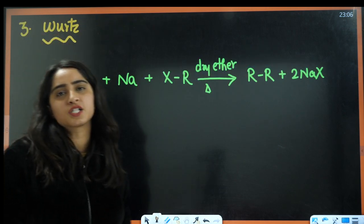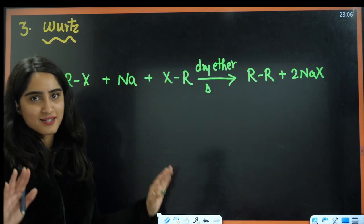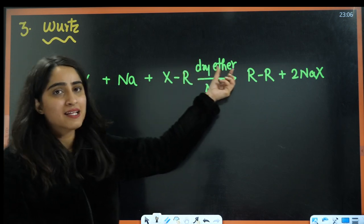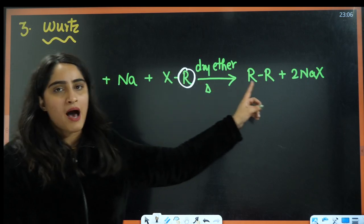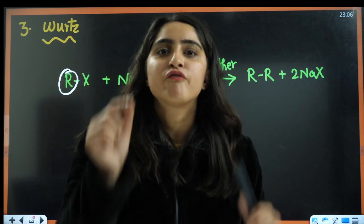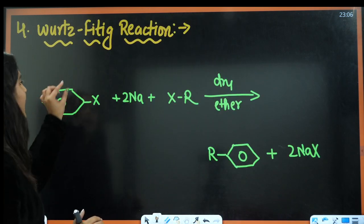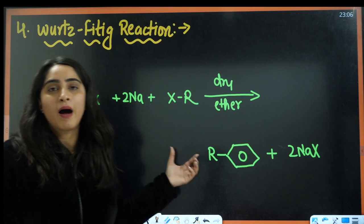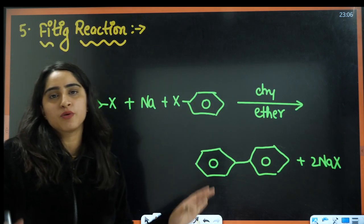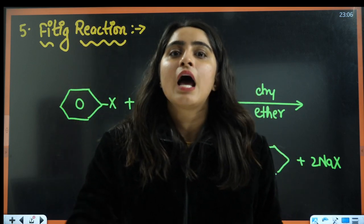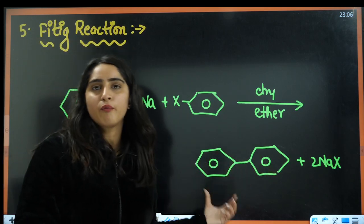Next is Wurtz reaction, Wurtz-Fittig reaction, and Fittig reaction — all are the same family. Sodium takes out the halogens and they combine in the presence of dry ether and heat (sodium is very reactive, hence dry ether). In Wurtz reaction, both parts are haloalkanes (R-R formed). In Wurtz-Fittig, one part is aryl and one is alkyl. In Fittig reaction, both halide parts are aryl, giving biphenyl.